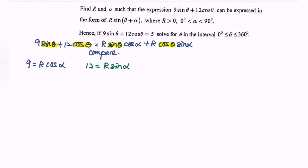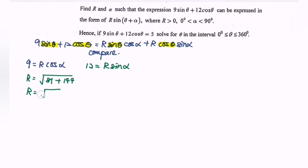Find r. So r = √(9² + 12²) = √(81 + 144) = √225. So finally r = 15.